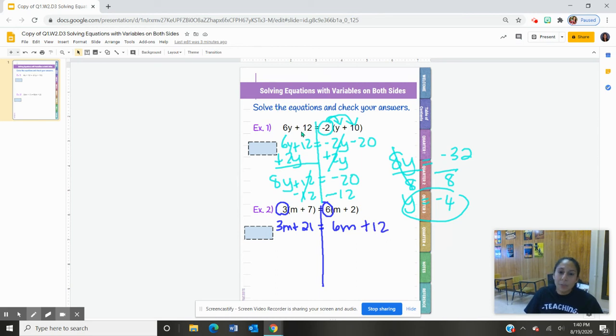Okay, just like the first one up here, we looked for the smaller variable. So I'm looking at 3m and 6m, which of those is smaller? So here, you'll notice that the 3m is smaller. So we're going to do the opposite of positive 3m, which is take away 3m.